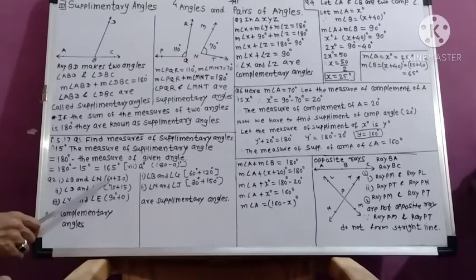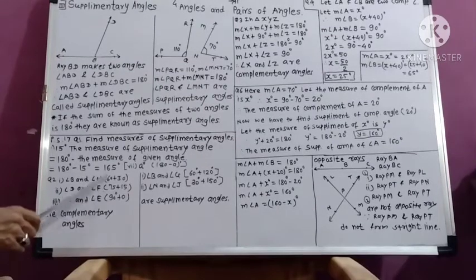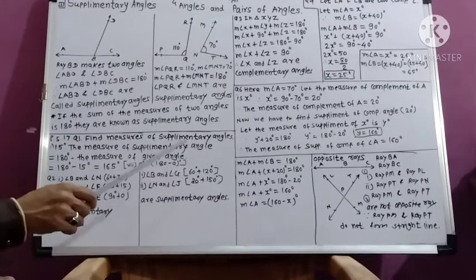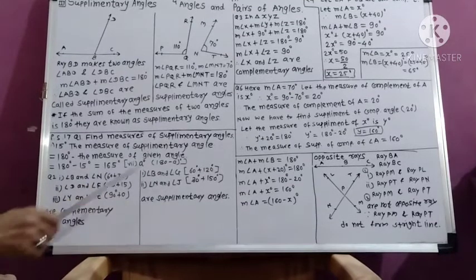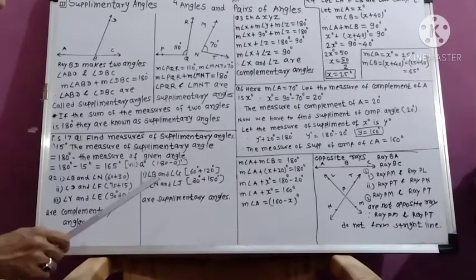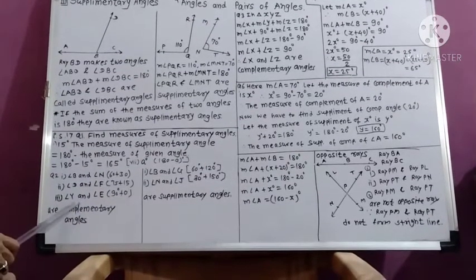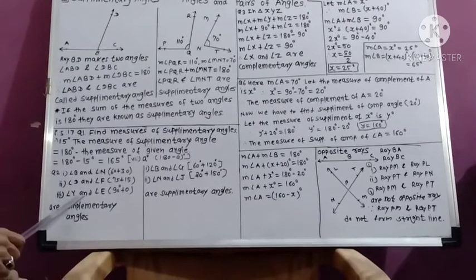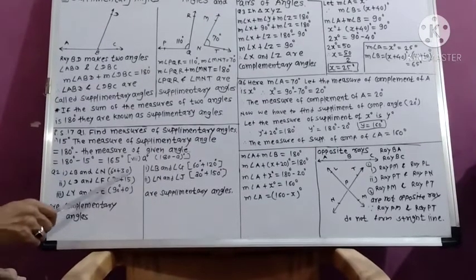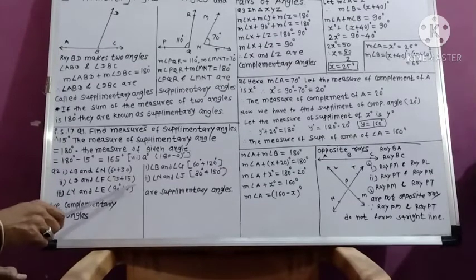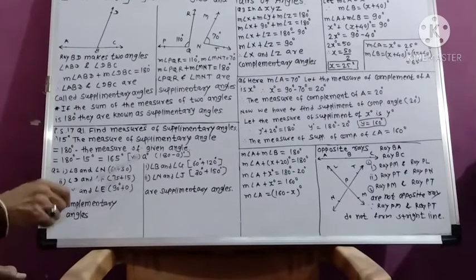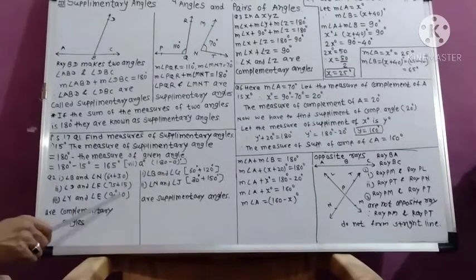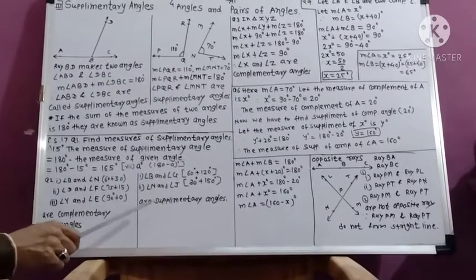Also, angle D and angle F have measures 75 degrees plus 15 degrees — their sum is 90 degrees, so they are also complementary angles. Similarly, angle Y and angle E have measures 90 degrees plus 0 degrees — their sum is 90 degrees, so they are also complementary angles.